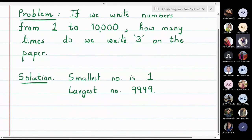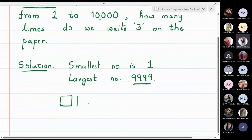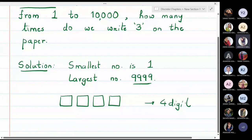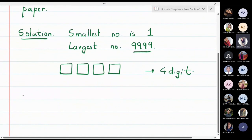We only need to concentrate on four-digit numbers, because when writing 10,000 the digit 3 is not involved. The largest number containing 3 in the range 1 to 10,000 is 9999, a four-digit number. So we split the counting into different cases.